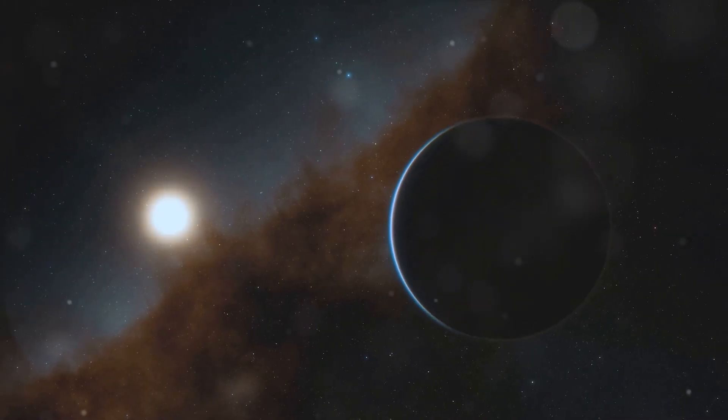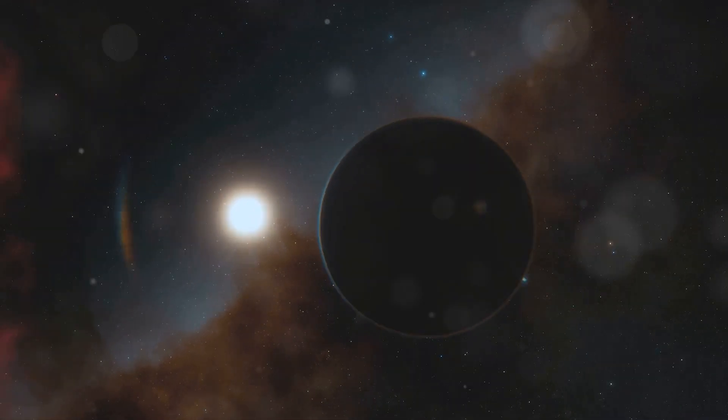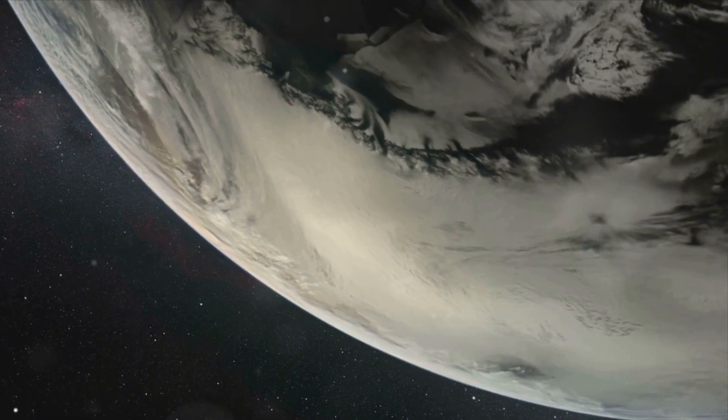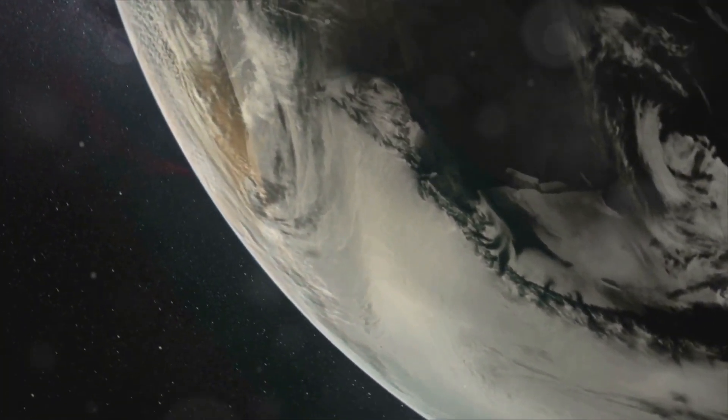This planet reflects less than 1% of the light that falls on it, making it blacker than coal, blacker than asphalt, blacker than any substance known to man. Scientists believe that its atmosphere may contain light-absorbing chemicals, but the true cause of its darkness remains a mystery.